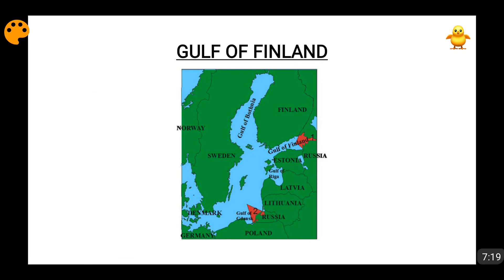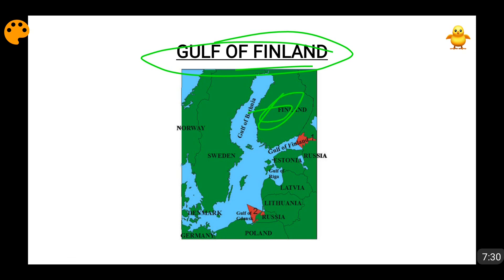Then comes the Gulf of Finland. Finland is to the north of the gulf and Estonia to the south, while the eastern side comes under Russia — specifically extending to the city of St. Petersburg. The eastern parts of the Gulf of Finland are under Russian control. The total area of this gulf is around 30,000 square kilometers.